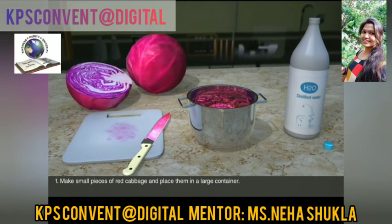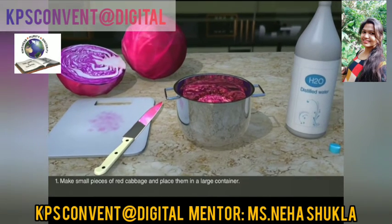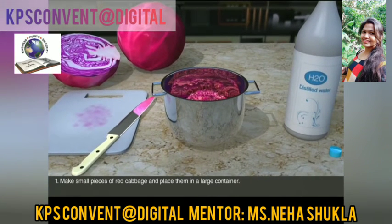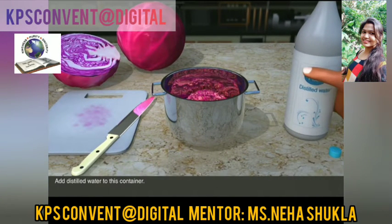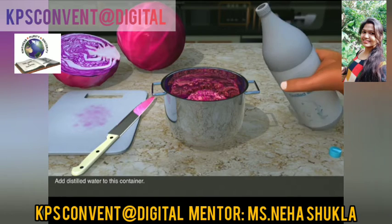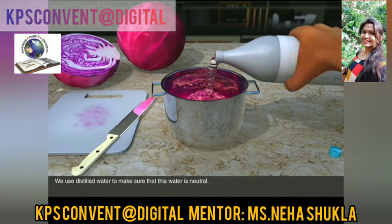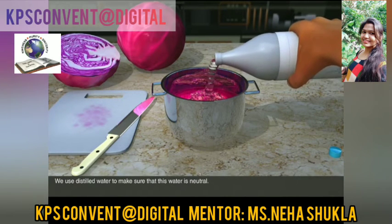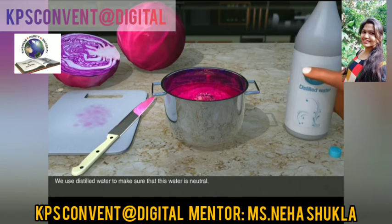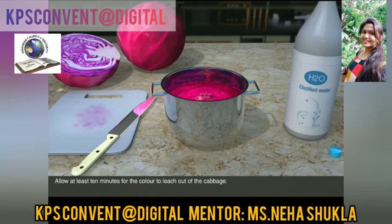To prepare a natural indicator, make small pieces of red cabbage and place them in a large container. Add distilled water to this container — we use distilled water to make sure that the water is neutral. Allow at least 10 minutes for the color to leach out of the cabbage.